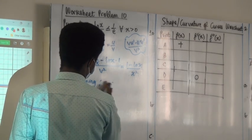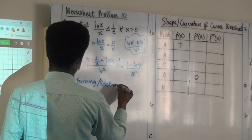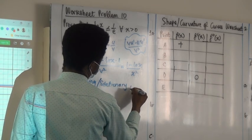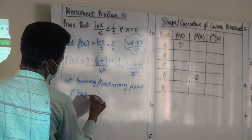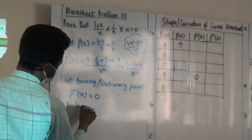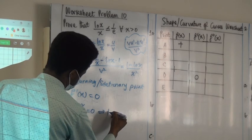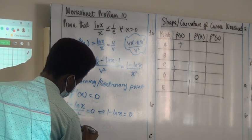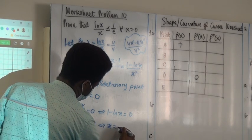The stationary point — you can say stationary point — dy/dx is equal to 0, which means 1 minus ln(x) over x² is equal to 0, which means 1 minus ln(x) is equal to 0, that means ln(x) is equal to 1, which means x is equal to e.